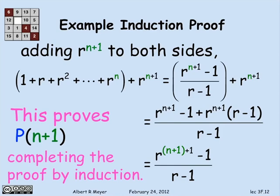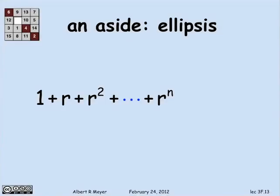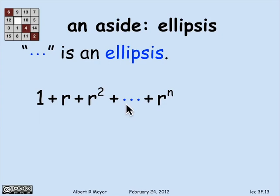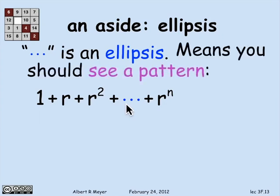That is the first basic example of an induction proof, and the whole template is now visible. By the way, the three dots that appeared in the sum are called an ellipsis — plural ellipses. They are used where the writer is trying to tell the reader that there's an obvious pattern that the reader is expected to see, which is fairly clear in this case: it's r to the 0, r to the 1, r to the 2, r to the 3, up to r to the n.